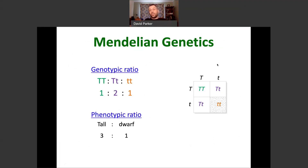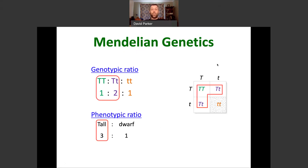Here's an example of tall and dwarf plants. Single gene, represented by the letter T. Depending on your genotype, you have a different phenotype. The genetic relationship is that big T is dominant over little t. If you have at least one big T, you are tall. If you have two little t's — homozygous recessive — you're a dwarf plant. You get the classic 3:1 ratio when you cross two heterozygous plants together, which tells you one gene is involved with a dominant and recessive Mendelian relationship.